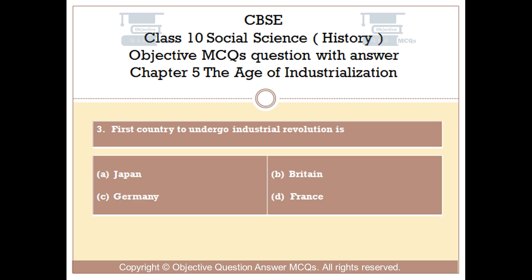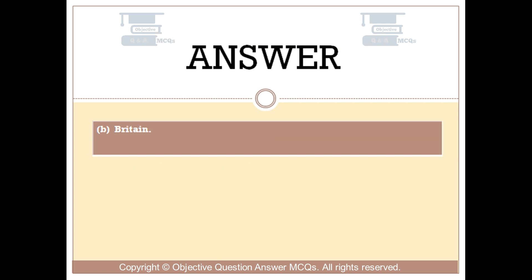Question number 3. The first country to undergo industrial revolution is: Option A, Japan; Option B, Britain; Option C, Germany; Option D, France. The right answer is Option B: Britain.